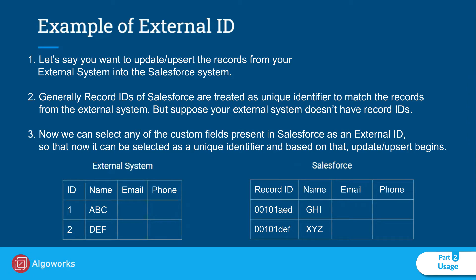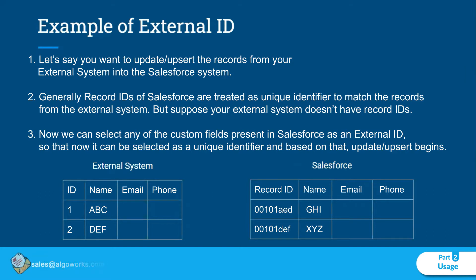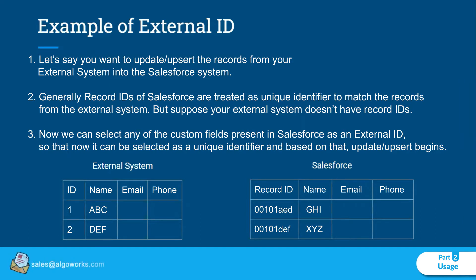Generally, Record IDs in Salesforce are treated as the unique identifier to match records from an external system. But suppose your external system does not have Record IDs — as you can see in the matrix, we have simple IDs in the external system rather than Salesforce Record IDs. In that case, we can select any custom field present in Salesforce as an External ID so it can serve as the unique identifier.